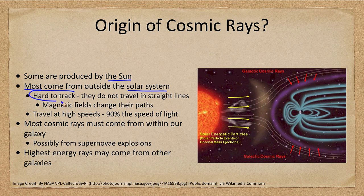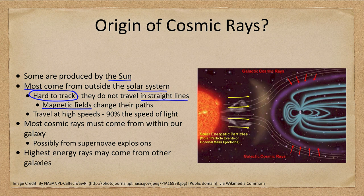Cosmic rays from outside the solar system are hard — nearly impossible — to track. Why? They don't travel in straight lines. Light travels in essentially a straight line so we can trace back where it came from, but these particles are deflected by magnetic fields — the galactic magnetic field, Earth's magnetic field, the solar magnetic field — so where they appear to come from has no relation to where they actually originated.